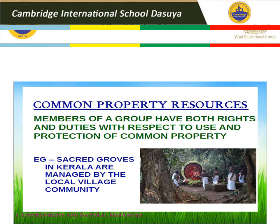Next, we have the topic of Common Property Resources — resources that belong to the common people, and they are responsible for taking care of them. Members of a group have both rights and duties with respect to the use and protection of common property. For example, sacred groves — a grove means a group of trees — in Kerala are managed by the local village community. Through mutual understanding and centuries of practice, many village communities in India have defined members' rights and responsibilities. A combination of factors including privatization, agricultural intensification, population growth, and ecosystem degradation have caused common property to dwindle in size, quality, and availability to the poor in much of the world.